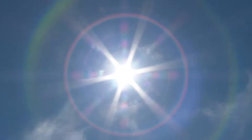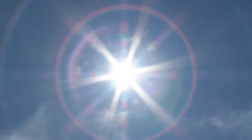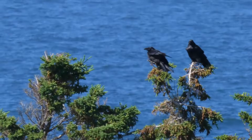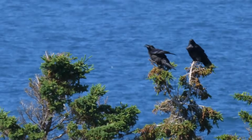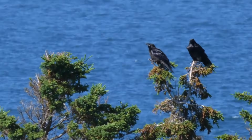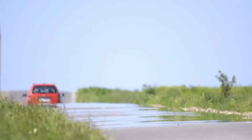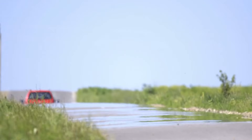The sun is the driving force behind the Earth's weather. Convection currents are caused by uneven heating of Earth's surface, including the water, which releases heat energy slowly, and land, which releases heat energy quickly.